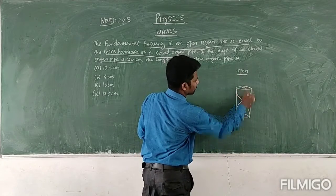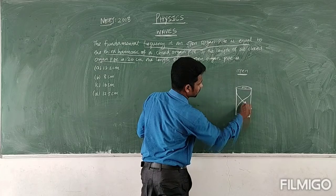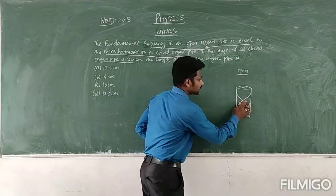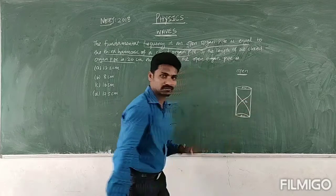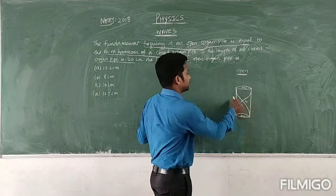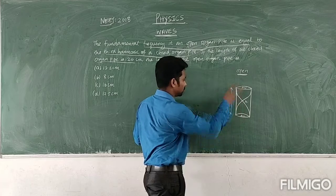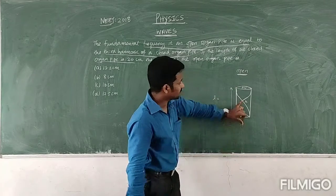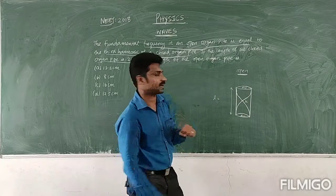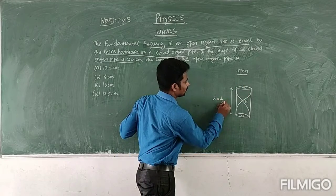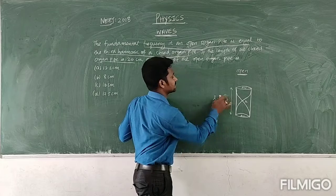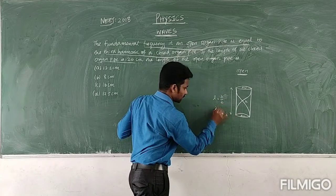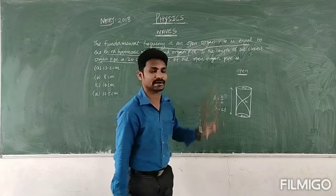Here antinodes will form at both ends, and the node will be formed in the middle. Now, the length of the tube in terms of wavelength: here 1/4 lambda, here 1/4 lambda — totally half lambda. So lambda is equal to 2L, where L is the length of the tube.